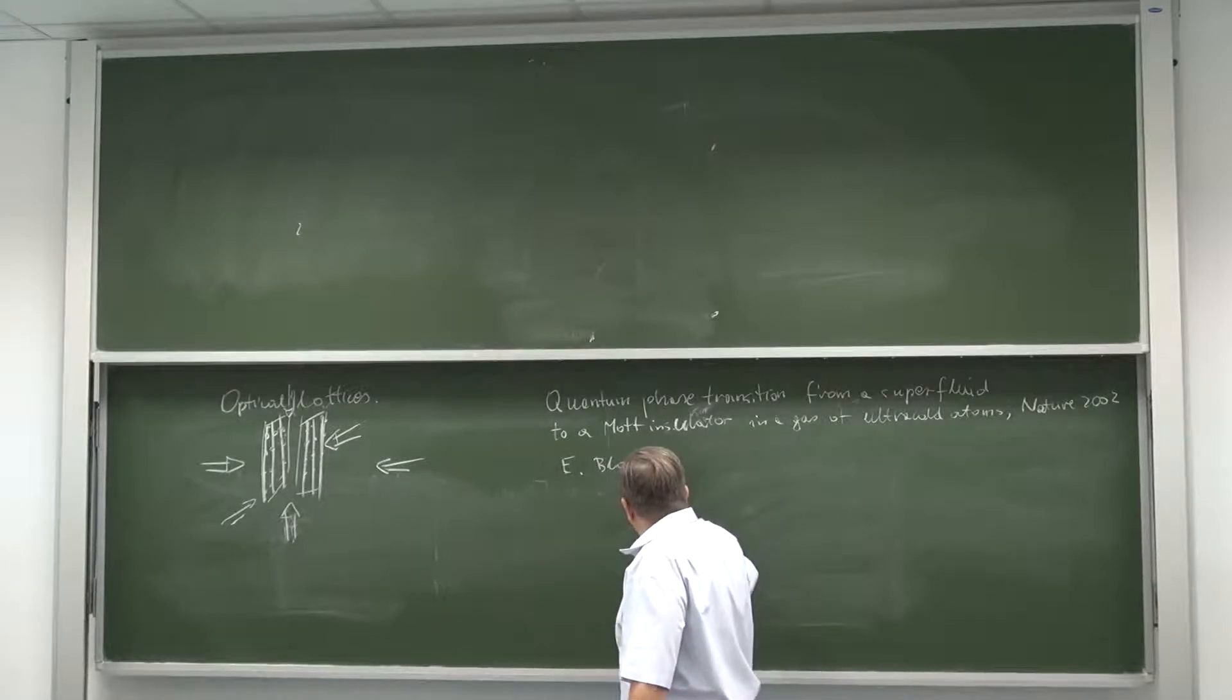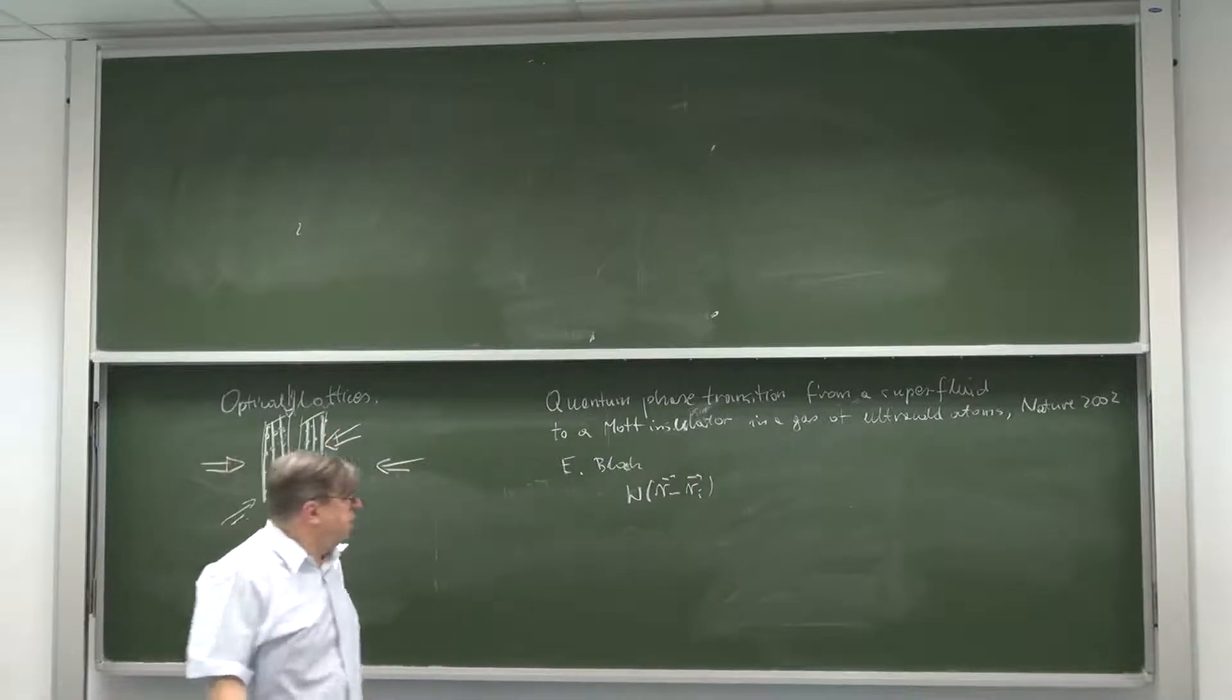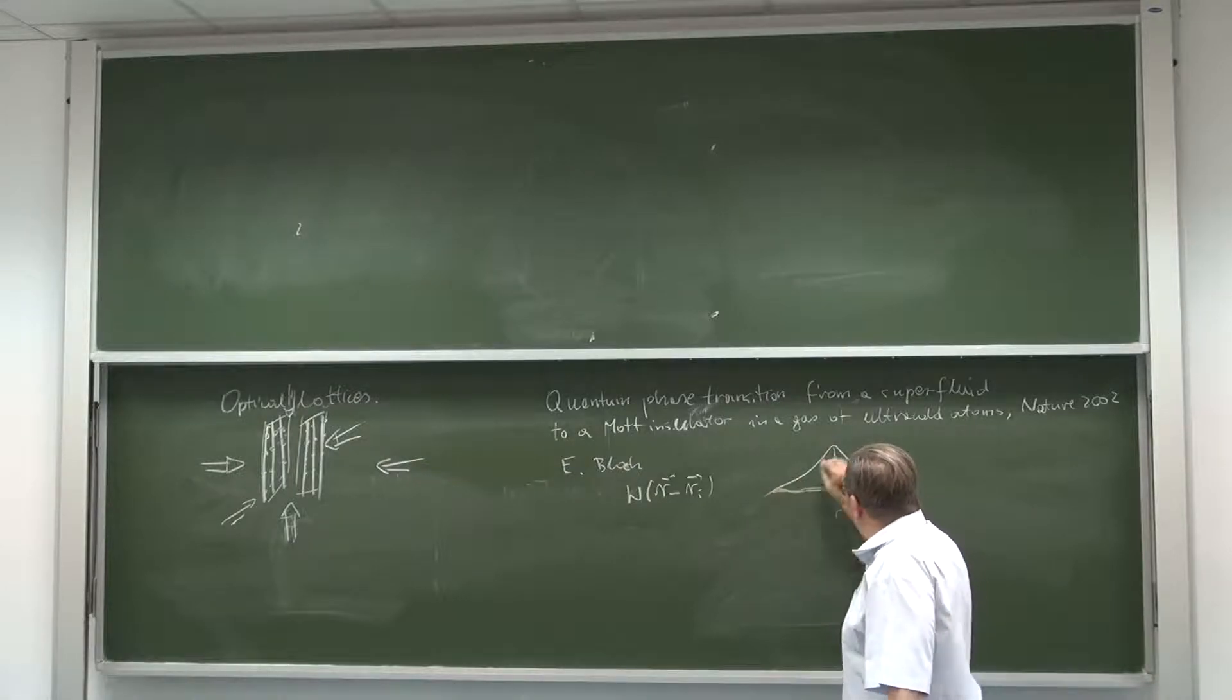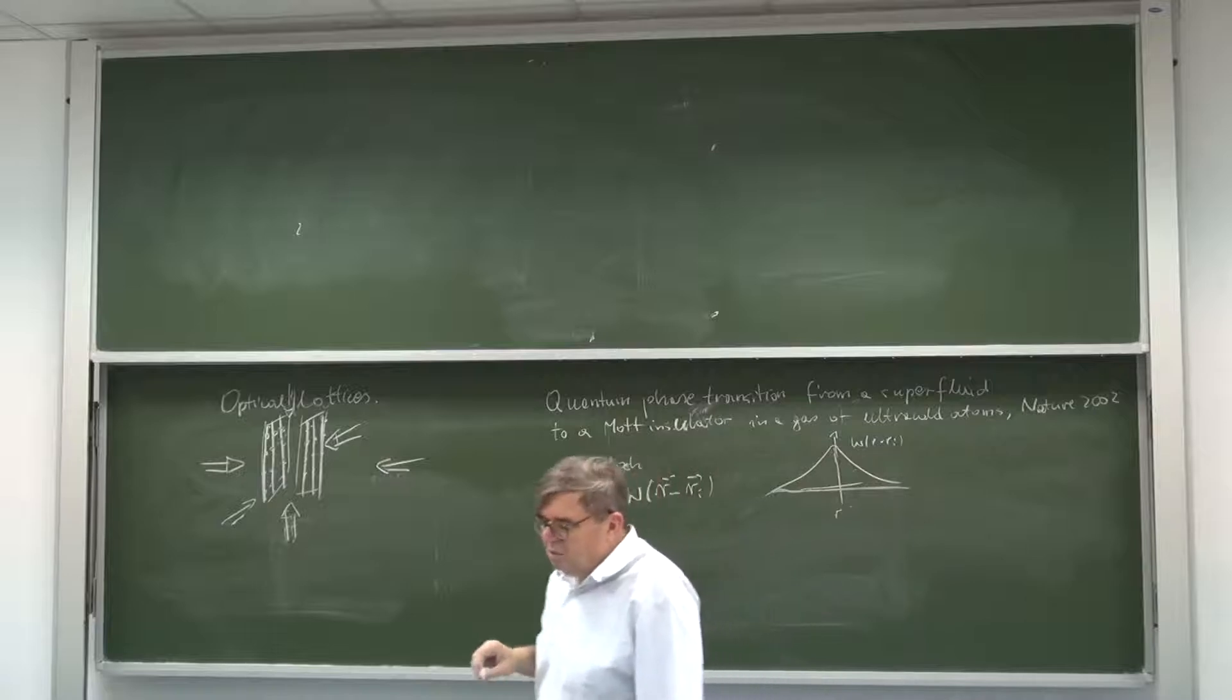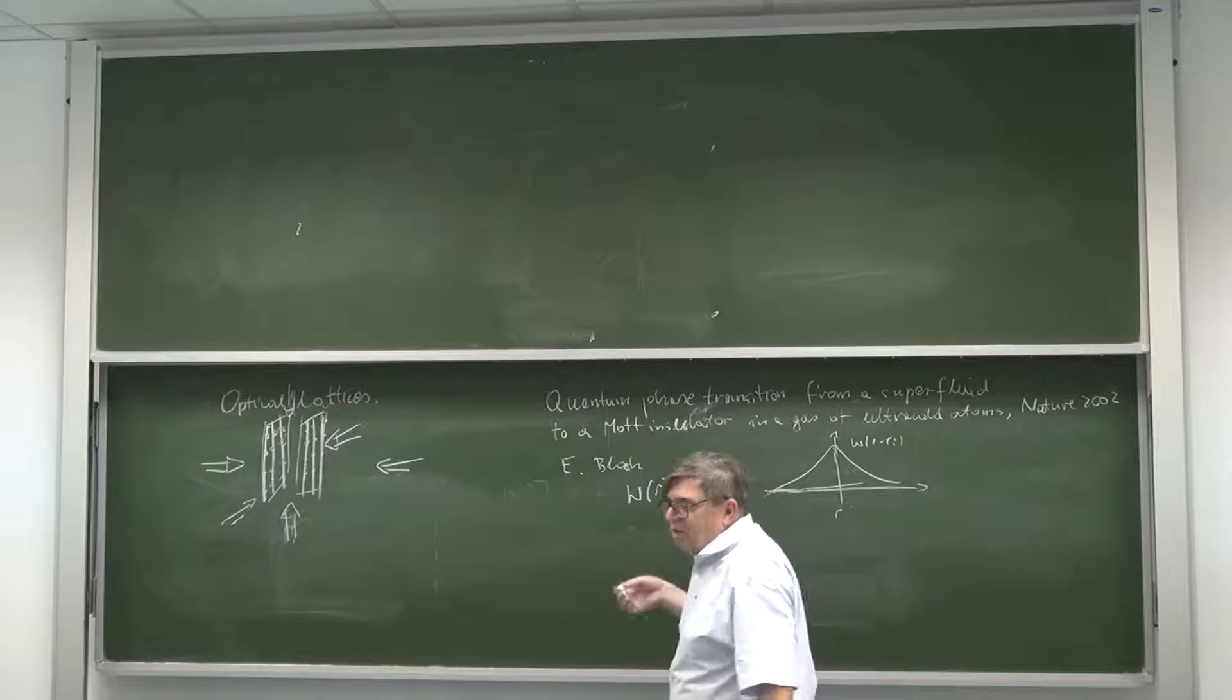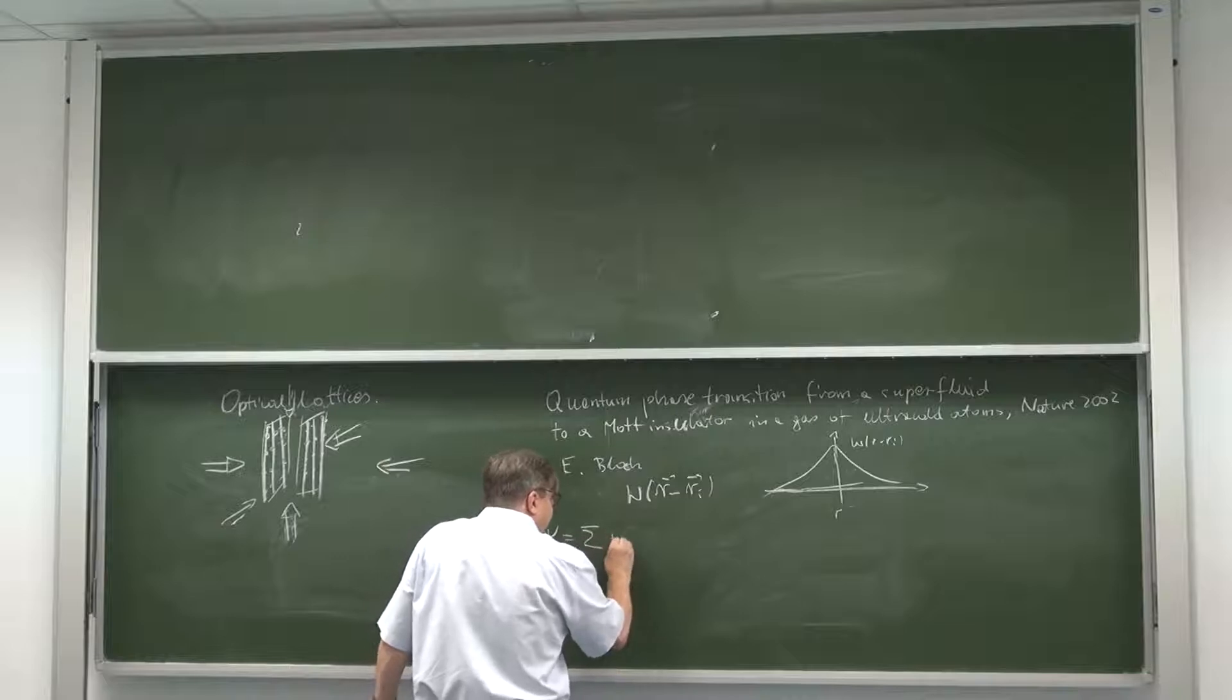So we will be using the Wannier functions. You don't have time for details, it can be done in the case of interference of light where the potential is sine squared, you can do it really analytically to a large extent. So you use the basis of Wannier wave functions which are localized at a given site. This is Wannier function w(r - r_i), where i will be the index denoting the individual lattice site. These functions are localized and they vanish exponentially at large distance.